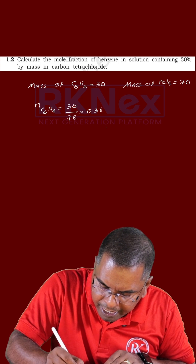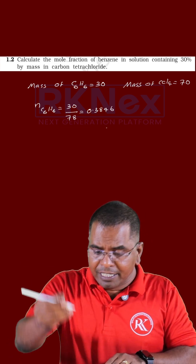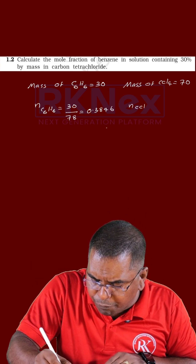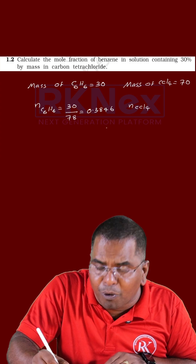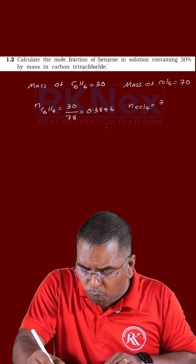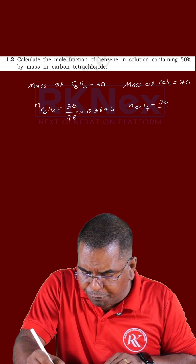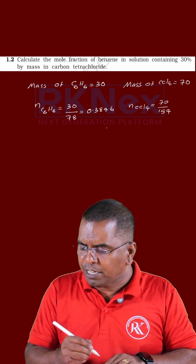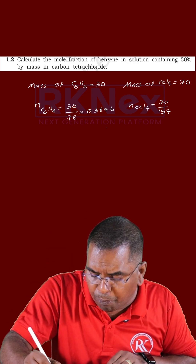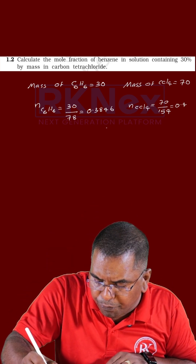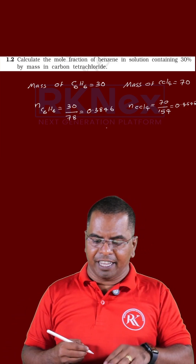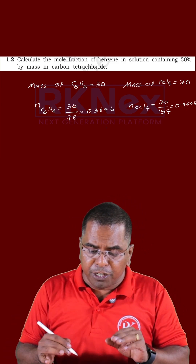The number of moles of carbon tetrachloride CCl₄ is 87 divided by 154 — the molar mass of CCl₄ is 154 — giving approximately 0.4545 moles.